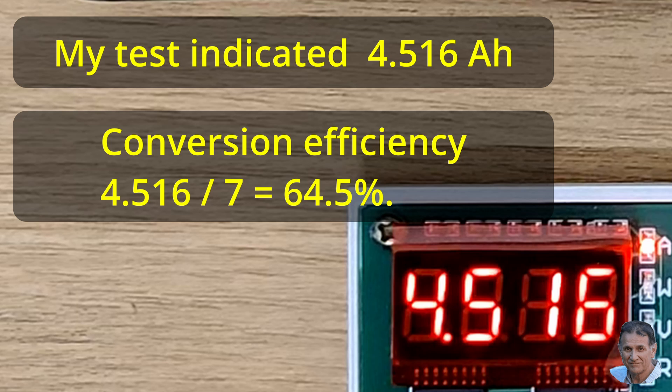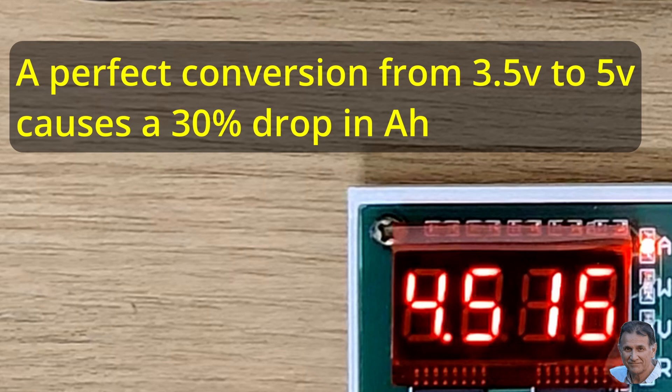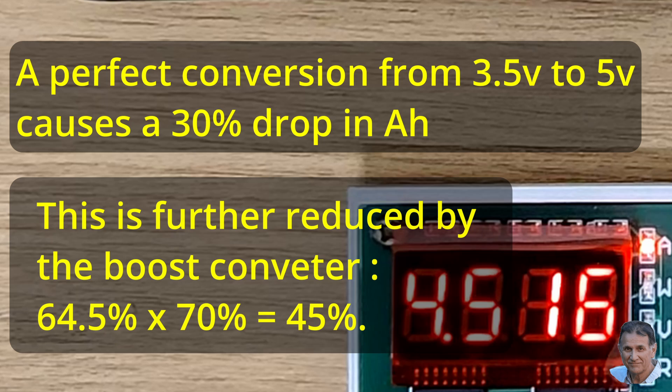Now that we've worked out what's happening, let's summarize our findings. A perfect conversion to 5V reduces the ampere hours by 30%. On top of that, the boost voltage converter and other losses reduce the ampere hours to around 45% of that advertised. So it seems quite reasonable to expect only half of the advertised capacity in milliampere hours.